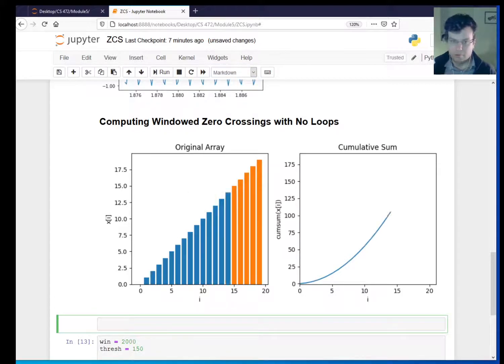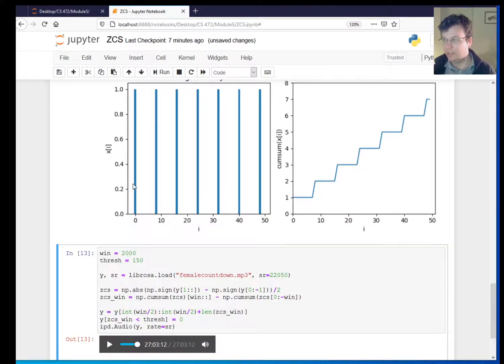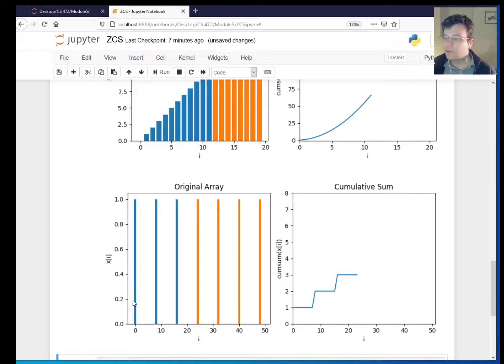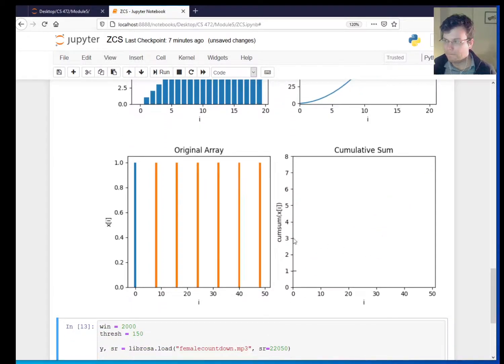And then I'm saying y equals np.cumsum of the array. So just to show you that's what I get. There it is. So this plot matches that plot there. So that's nice. But how can we use that to help us find zero crossings in a window? Well, I'm going to tell you. So let's look at another example of a function that we do a cumulative sum of, or an array that we do a cumulative sum of.